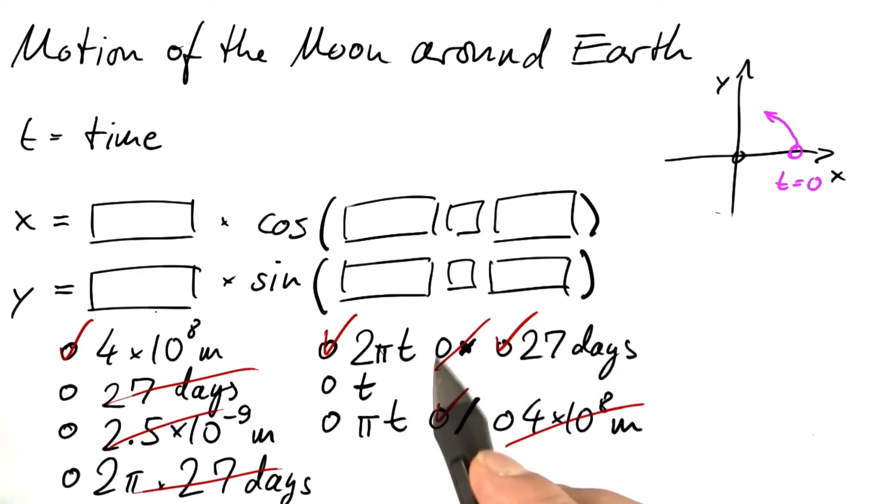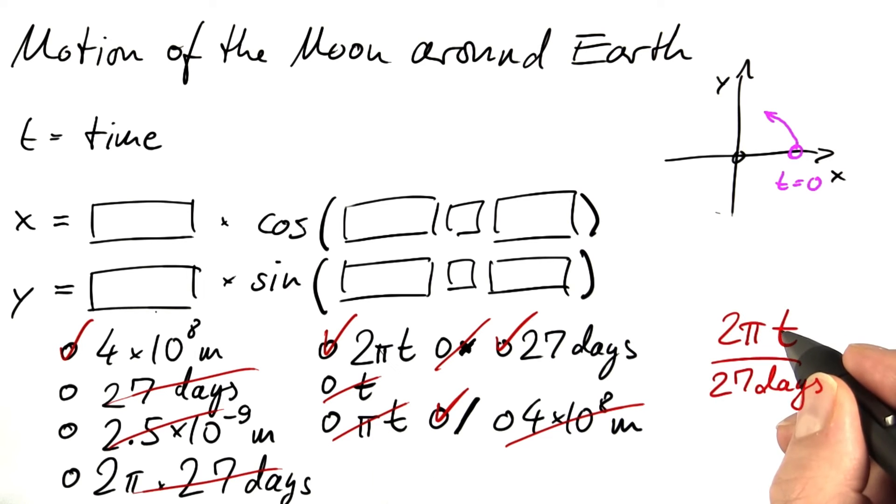And the remaining choice, 2π times the time. Not this one. Not this one. If we let t grow by 27 days, one complete period, the numerator increases by 2π times 27 days. And this ratio increases by 2π times 27 days divided by 27 days, by 2π.